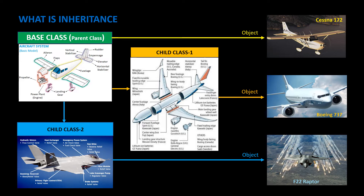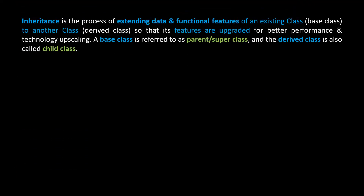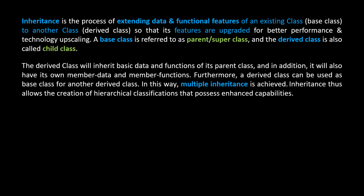So what is inheritance? Inheritance is the process of extending data and functional features of an existing class, or base class, to another class, the derived class, so that its features are upgraded for better performance and technology upscaling. A base class is referred to as parent or super class, and the derived class is also called child class. The derived class will inherit basic data and functions of its parent class, and in addition, it will also have its own member data and member functions.